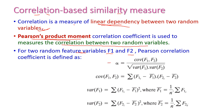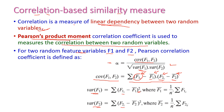The formula for the Pearson correlation coefficient is alpha equal to covariance of F1, F2 divided by the square root of variance of F1 times variance of F2. The covariance of F1 and F2 equals summation of (F1 minus F1-bar) times (F2 minus F2-bar), where F1-bar is the mean of F1 and F2-bar is the mean of F2. The variance of F1 equals summation of (F1 minus F1-bar) squared, and variance of F2 equals summation of (F2 minus F2-bar) squared.